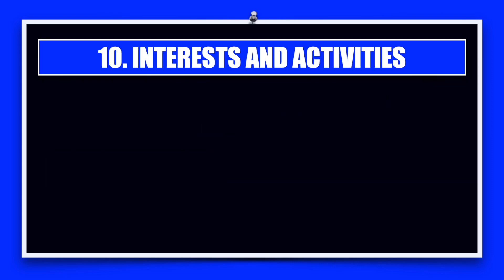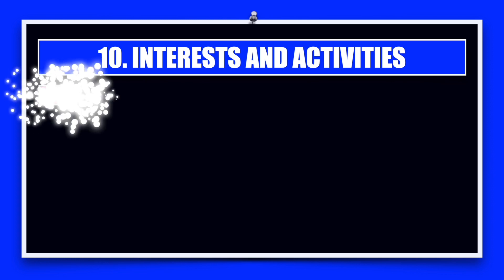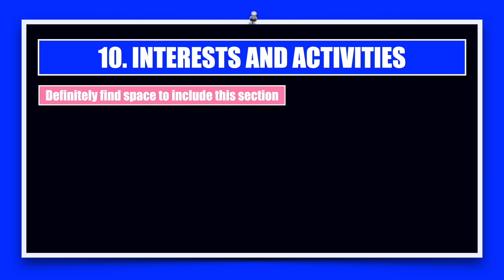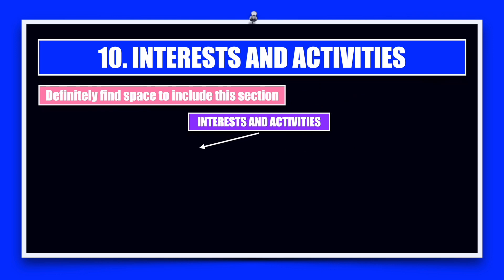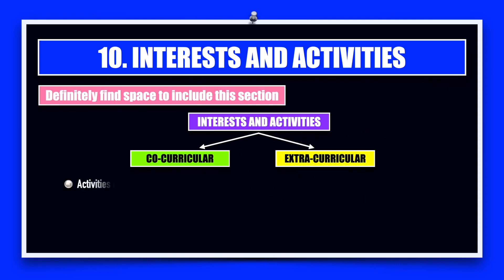The next category is interests and activities, and this is in fact very important for your resume. Companies nowadays are not interested in hiring only people who are programming the whole day — they want to hire people with more holistic development and want to know what you do other than your studies. Definitely find space in your resume for this section. Please subdivide interests and activities first into co-curricular and then into extracurricular sections.